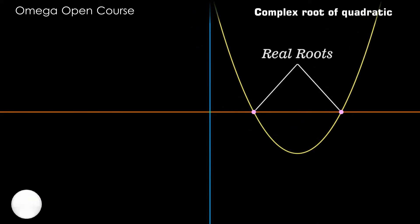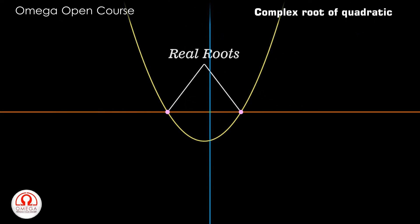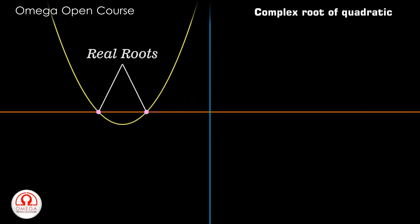If both the points of intersection are on the positive side of the x-axis, then both roots are positive. In such case, one root is positive and another negative. In this case, both the roots are negative.